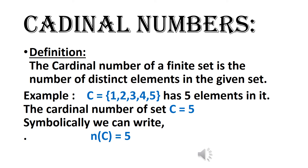Cardinal numbers: The cardinal number of a finite set is the number of distinct elements in the given set. Example: C = {1, 2, 3, 4, 5} — C has 5 elements. The cardinal number of set C is 5, written symbolically as N(C) = 5.